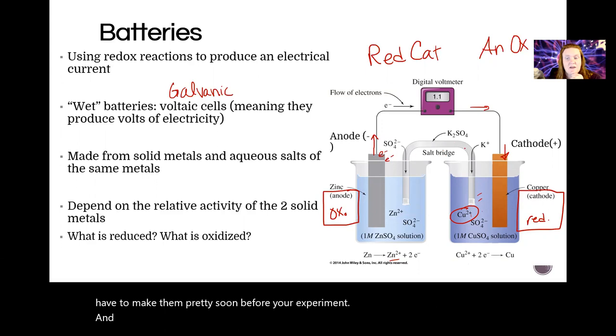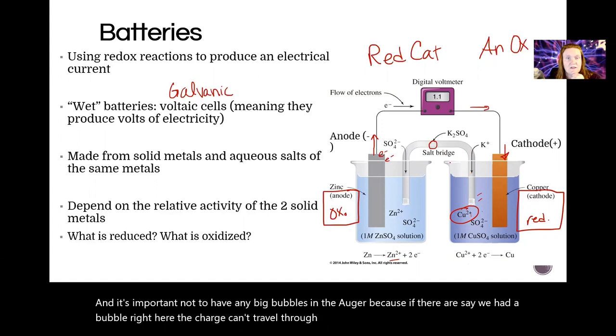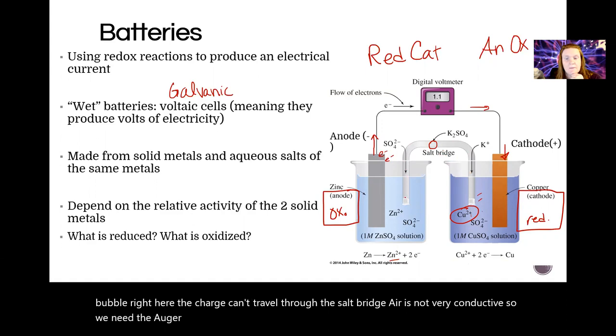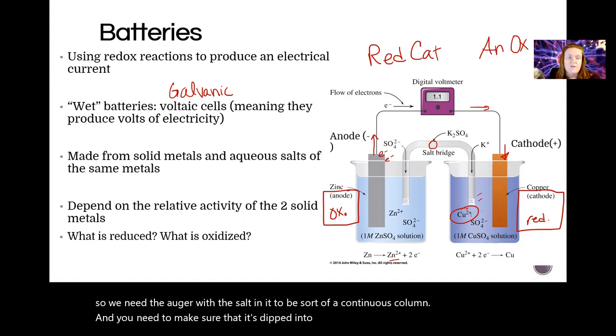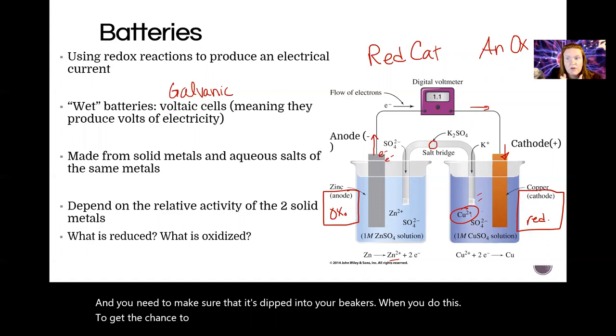And it's important not to have any big bubbles in the agar because if there are, say we had a bubble right here, the charge can't travel through the salt bridge. Air is not very conductive, so we need the agar with the salt in it to be sort of a continuous column and you need to make sure that it's dipped into your beakers when you do this. So you're going to get the chance to build your own wet battery cells.